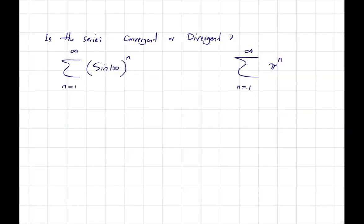We want to check to see if these two series are convergent or divergent. Do we recognize any pattern here? Let me write down this.